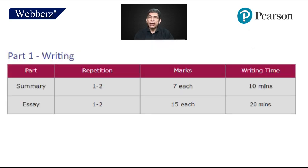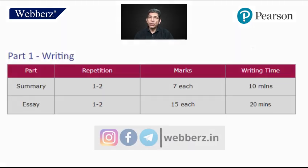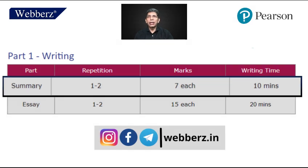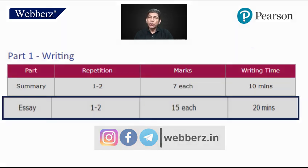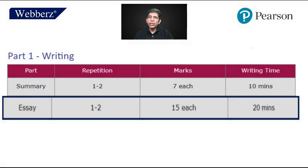In writing, which is also in Part 1, the first task is called summary. Repetitions are 1 to 2, marks are 7 each, and the writing time is 10 minutes. For essay, it is 1 to 2 repetitions, 15 marks each, and writing time is 20 minutes.